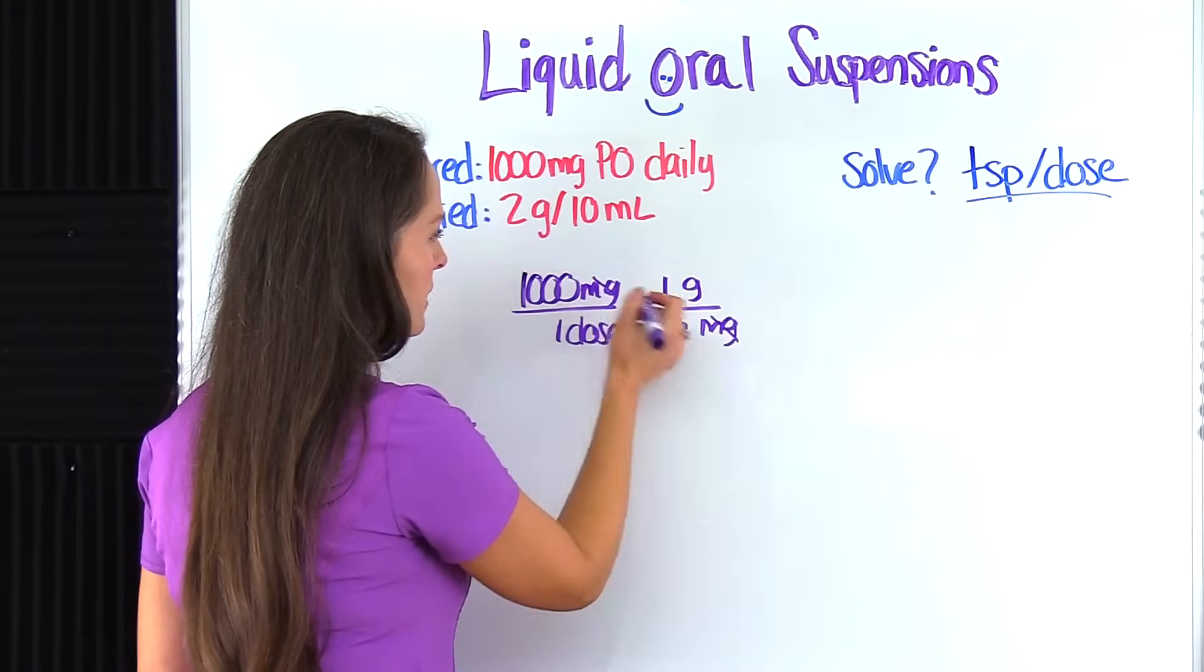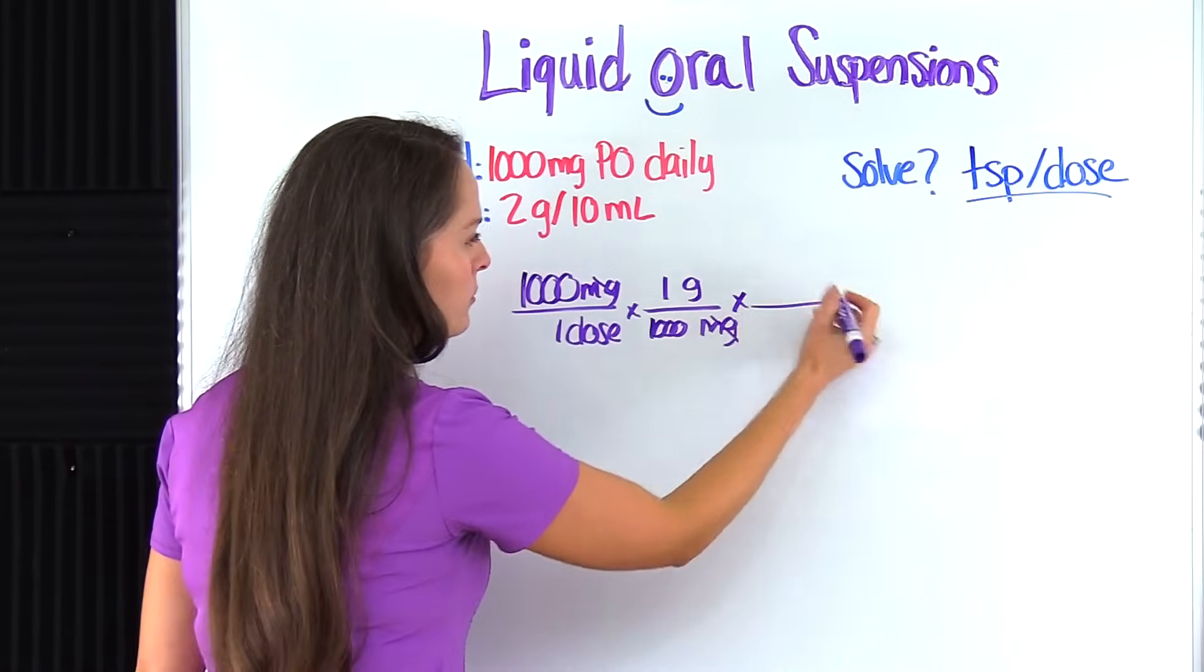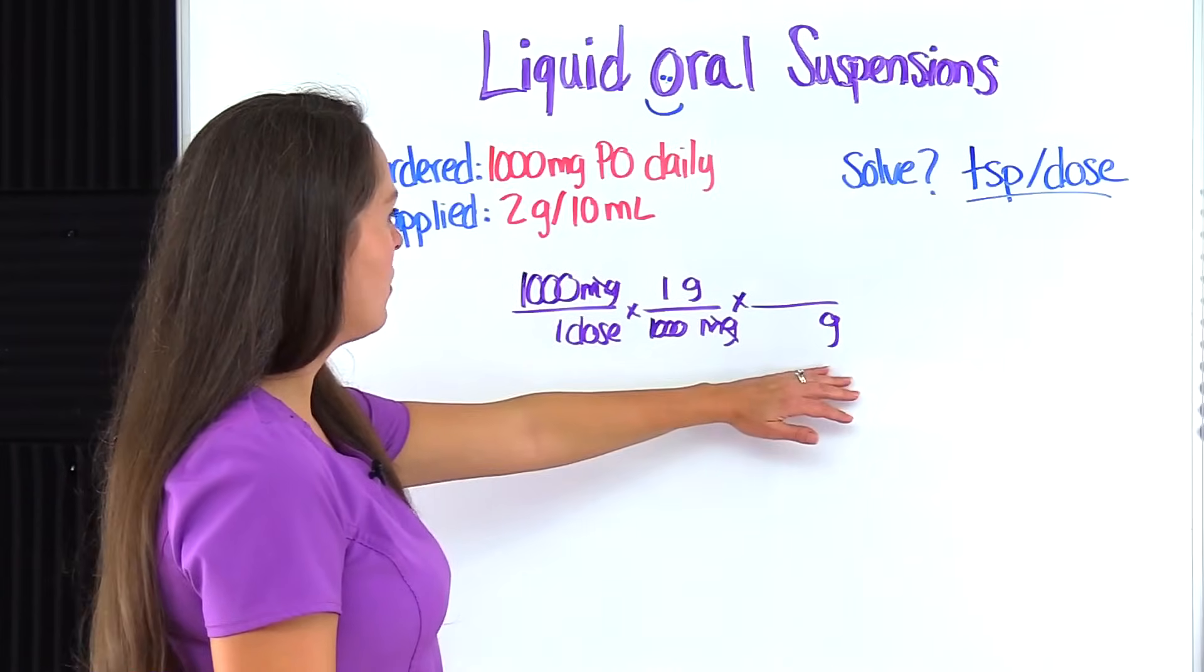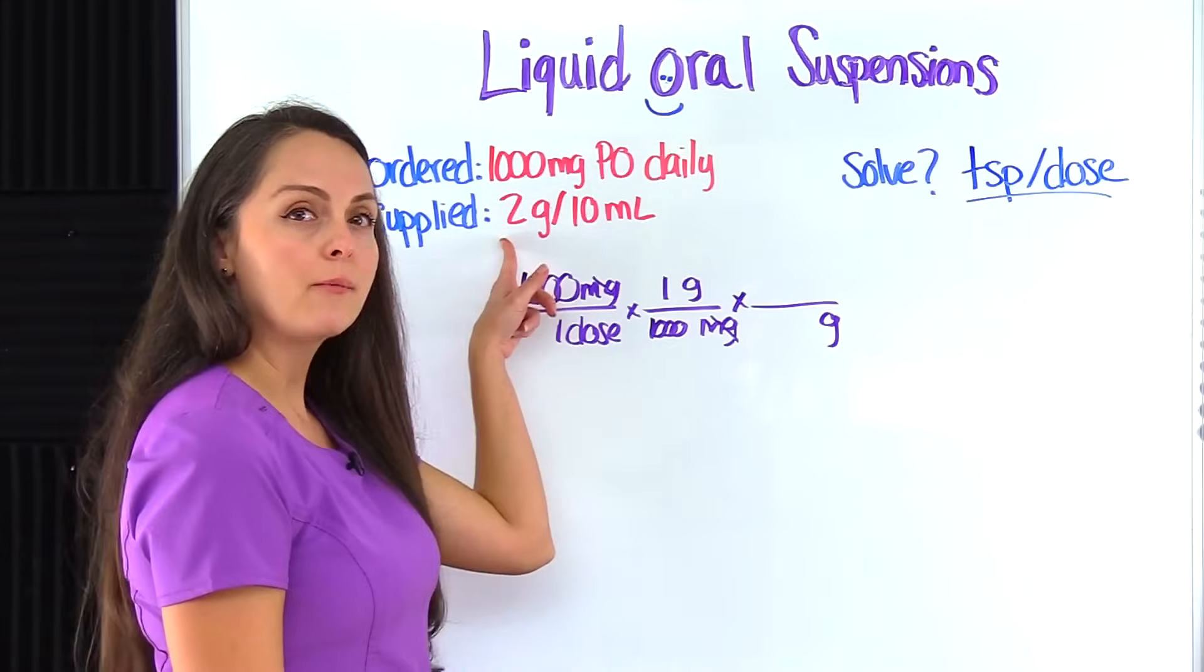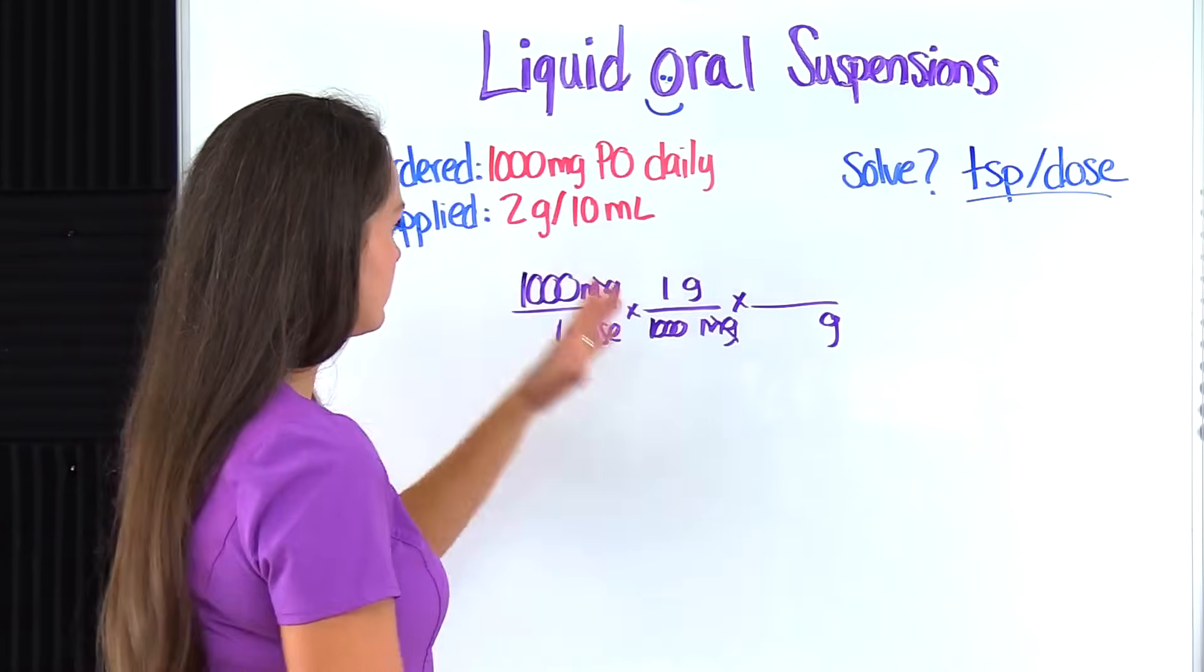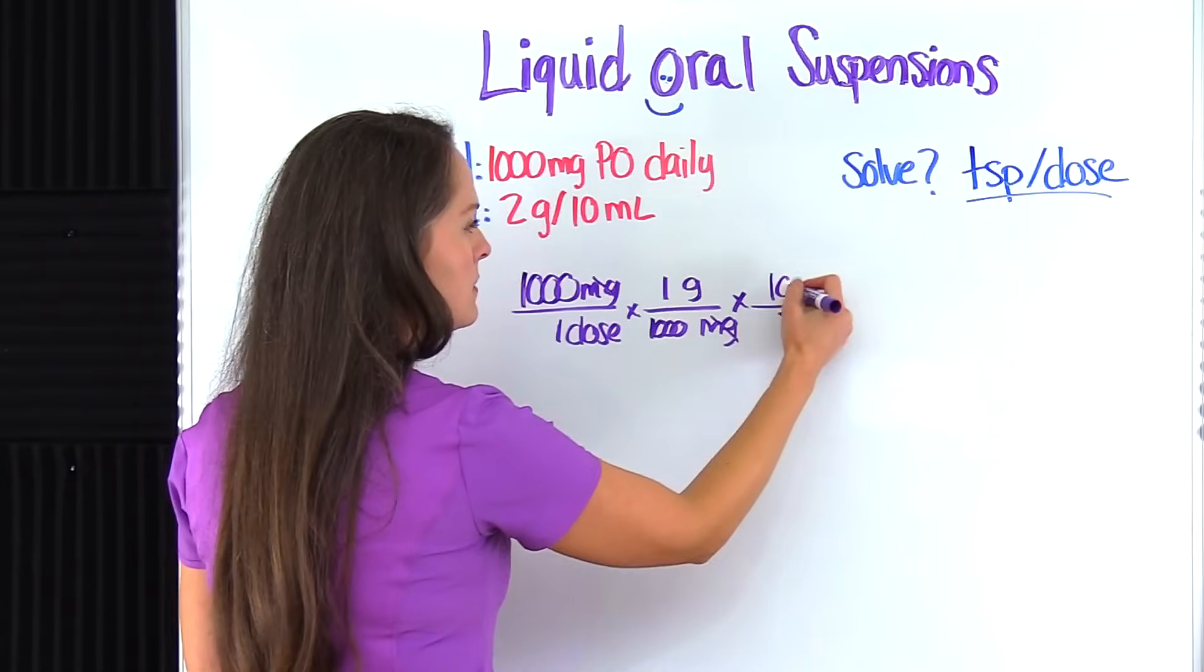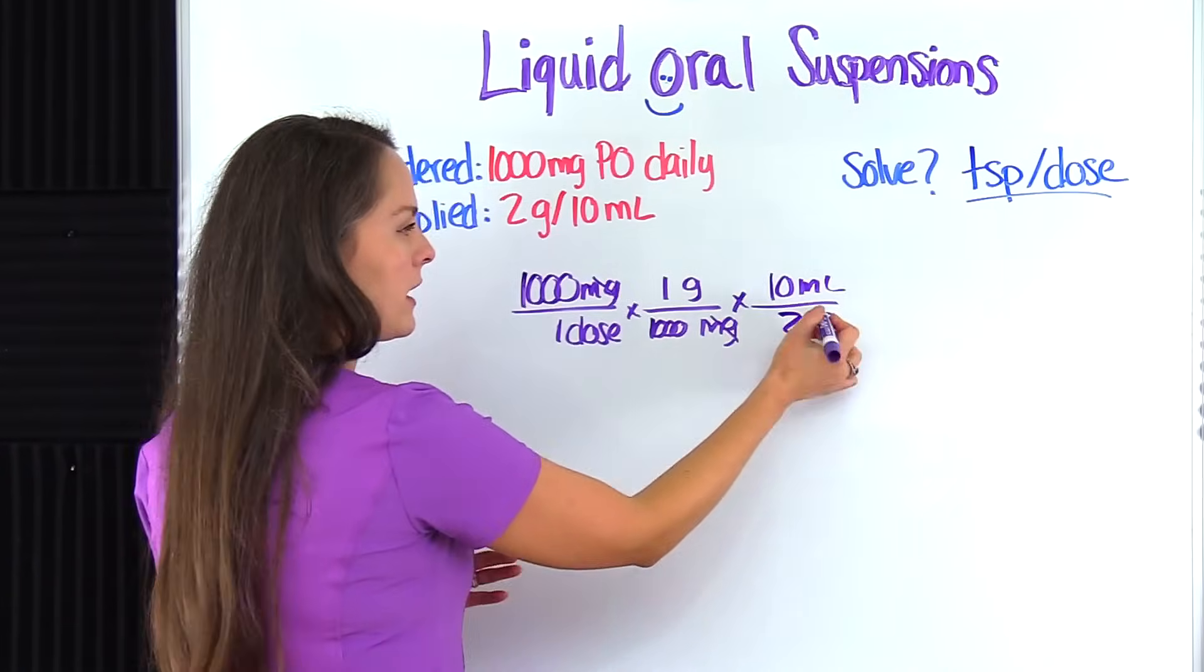We know from the metric table that there are 1,000 milligrams in one gram. This cancels out milligrams. Then we're going to pull that unit over here. Okay, so we have grams. Now we can plug in this information that we have, what we're supplied with, because we've converted. So you get 2 grams is equal to 10 milliliters. Okay, that cancels grams out.